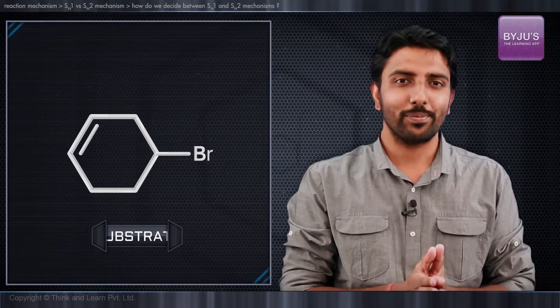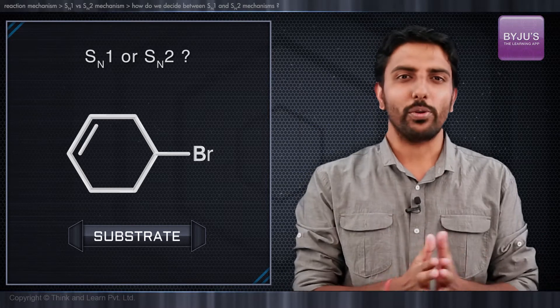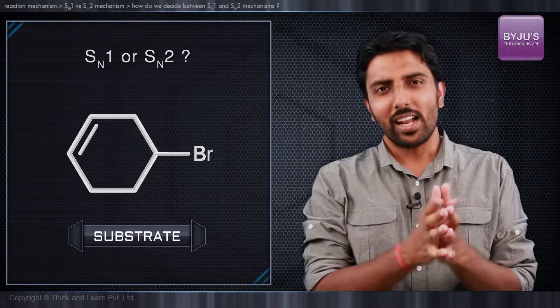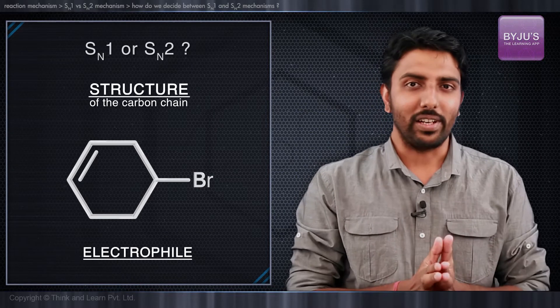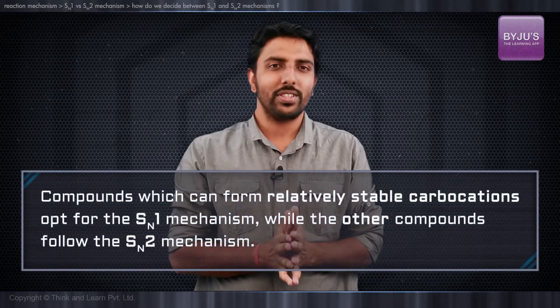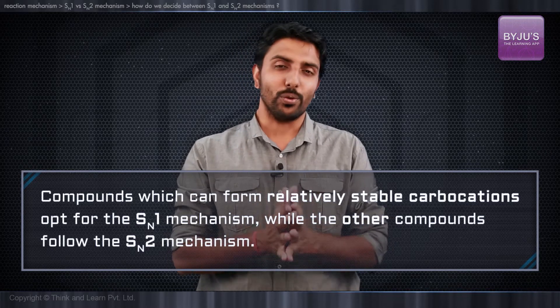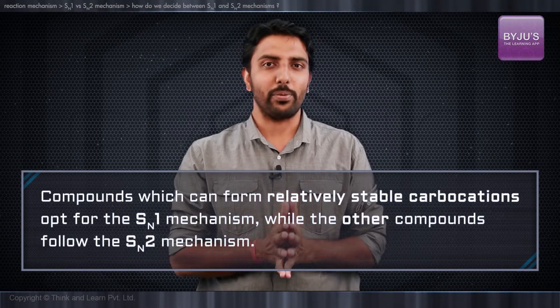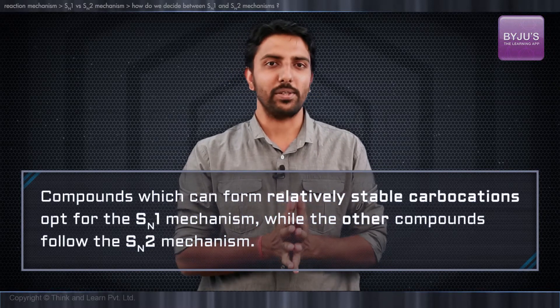Suppose you are given a substrate and asked to decide between SN1 and SN2 mechanisms. This largely depends upon the structure of the carbon chain or the electrophile. A very good rule of thumb is that compounds which can form relatively stable carbocations do so and opt for the SN1 pathway, while others have to react via the SN2 mechanism.